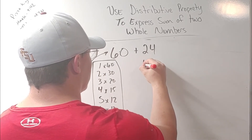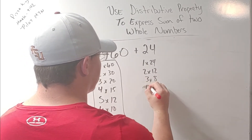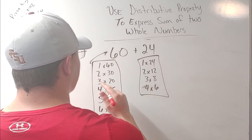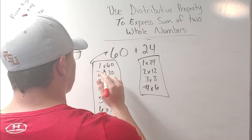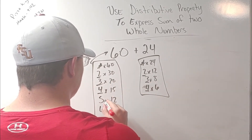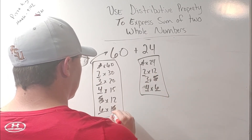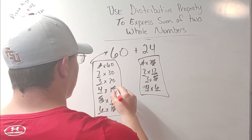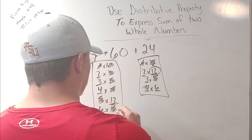Now we're going to find the factors of 24: 1×24, 2×12, 3×8, 4×6. Comparing the two lists, ones obviously work; 2 works; 3 works; 4 works; 5 does not work; 6 works; 8 is not on both; 10 is not on both; 12 is on both. We don't have 24 or 15 or 20 on both. So our greatest common factor is 12.